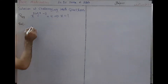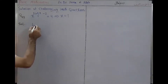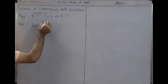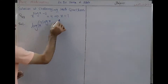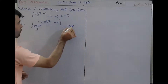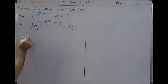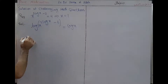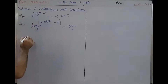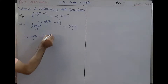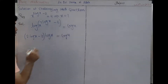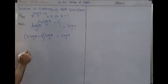We take log of both sides: log of x to the power 2 into log x minus 2, it is equal to 4 log 4. Then we get 2 into log x minus 2 into log x is equal to log 4.